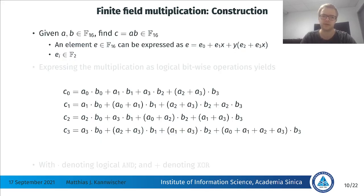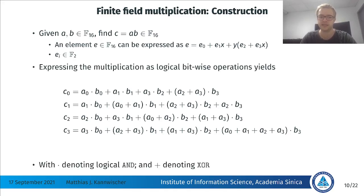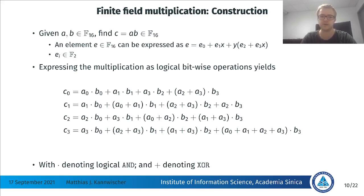Given elements A and B, we represent them using their bits — called EI — and can express the multiplication as logical bitwise operations. The dots represent logical ANDs and the pluses represent XORs. If we have the elements bit-sliced into registers, we can directly implement these ANDs and XORs to perform the multiplication.